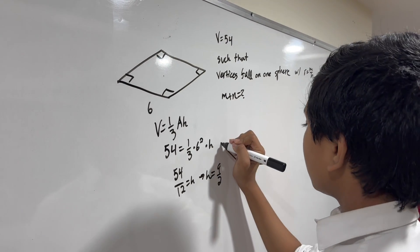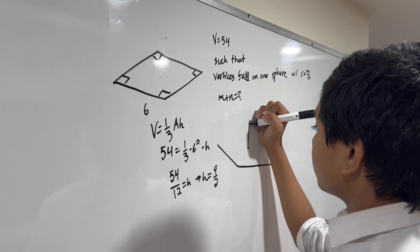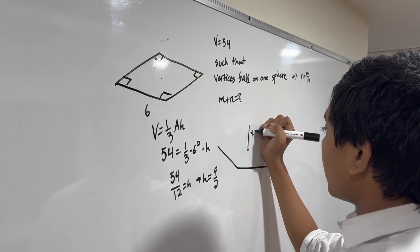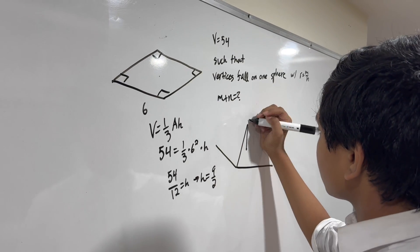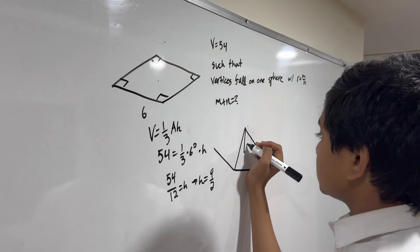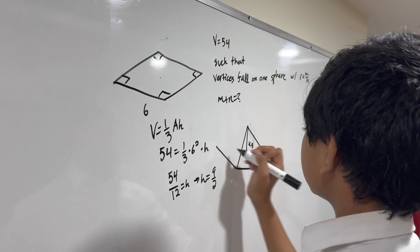So we have a pyramid with height 4.5 and base side length 6.